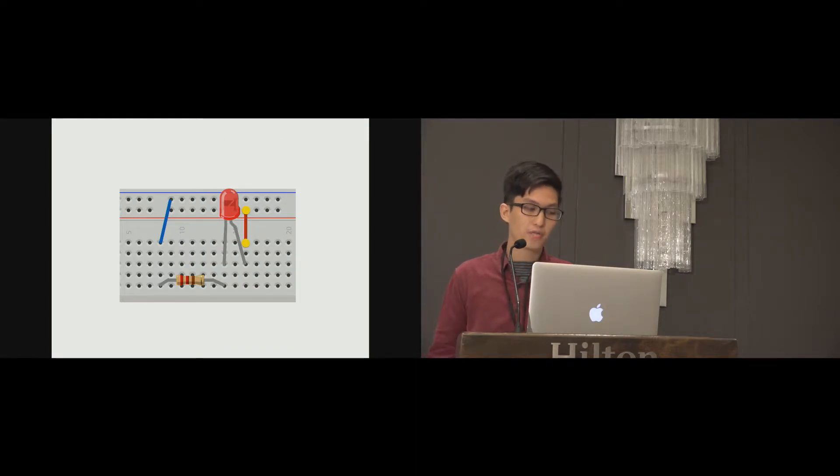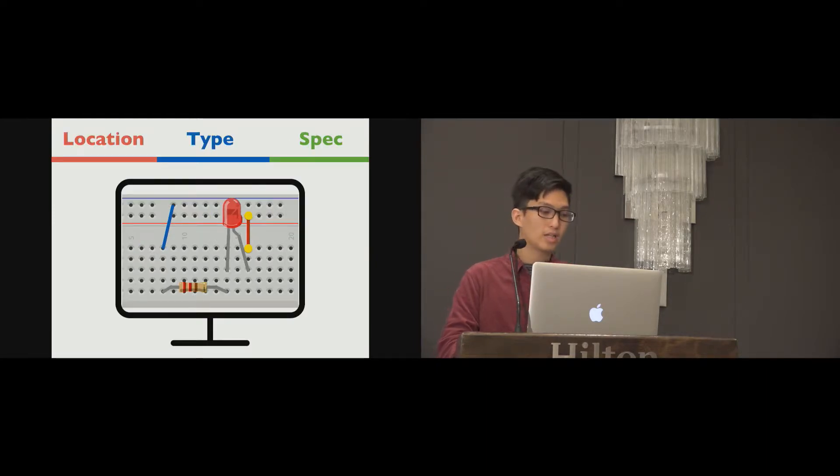So what kinds of information do we need to know? First, locations. We need to know where a component is inserted into breadboard. Second, type. We need to know what type of component it is. Third, specification of a component. For example, we need to get the resistance of a resistor. So location, type, and the spec - these three key information we need to sense the circuits.